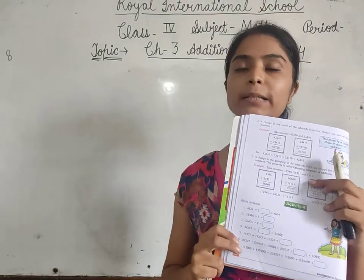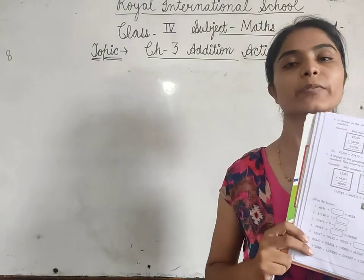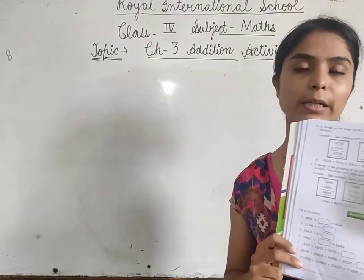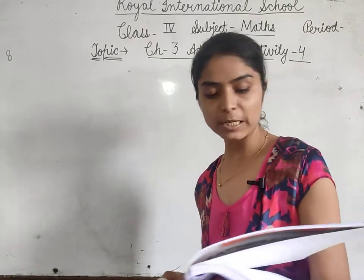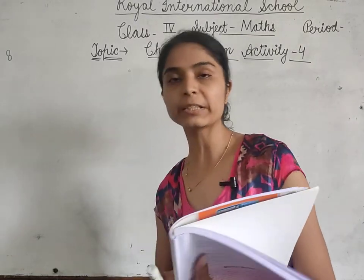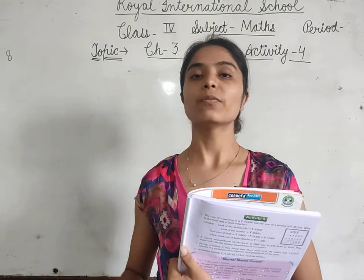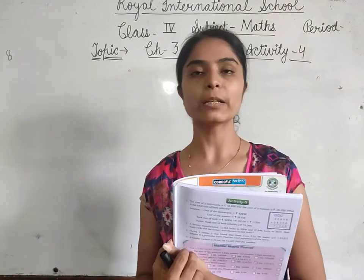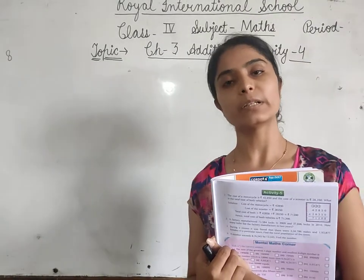Page number 36, activity number 4. Ye activity you have completed in the book. This activity is about addition properties. Addition properties: when 0 is added to any number, the answer will be the number itself.